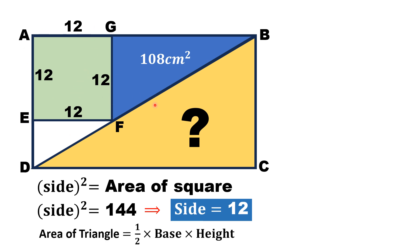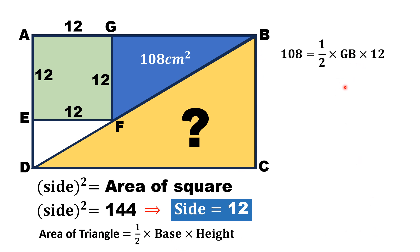Now we know that area of a triangle is equal to half times its base times height. Considering this blue shaded triangle, area is equal to 108 cm square and one side GF is 12, while GB is unknown. Substituting these values and solving for GB, we get GB is equal to 18 cm.